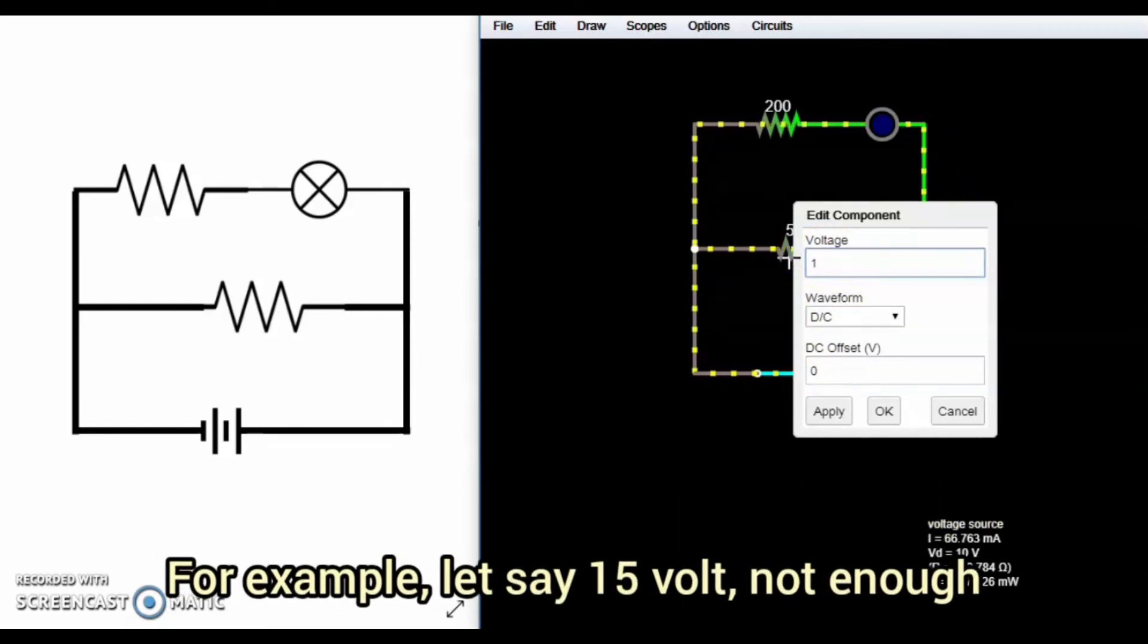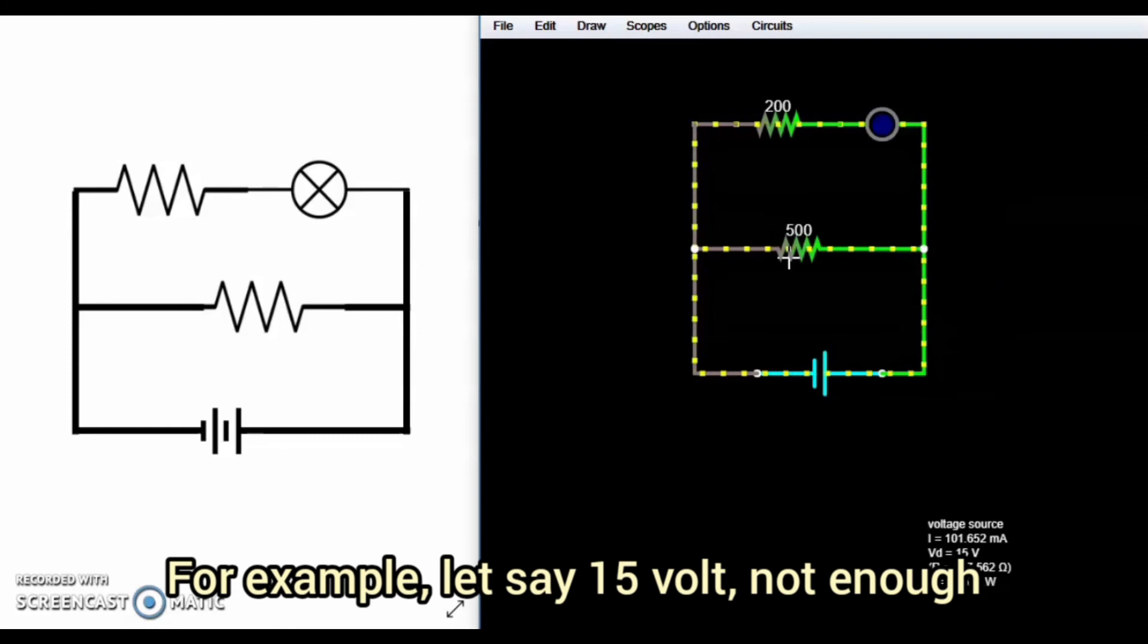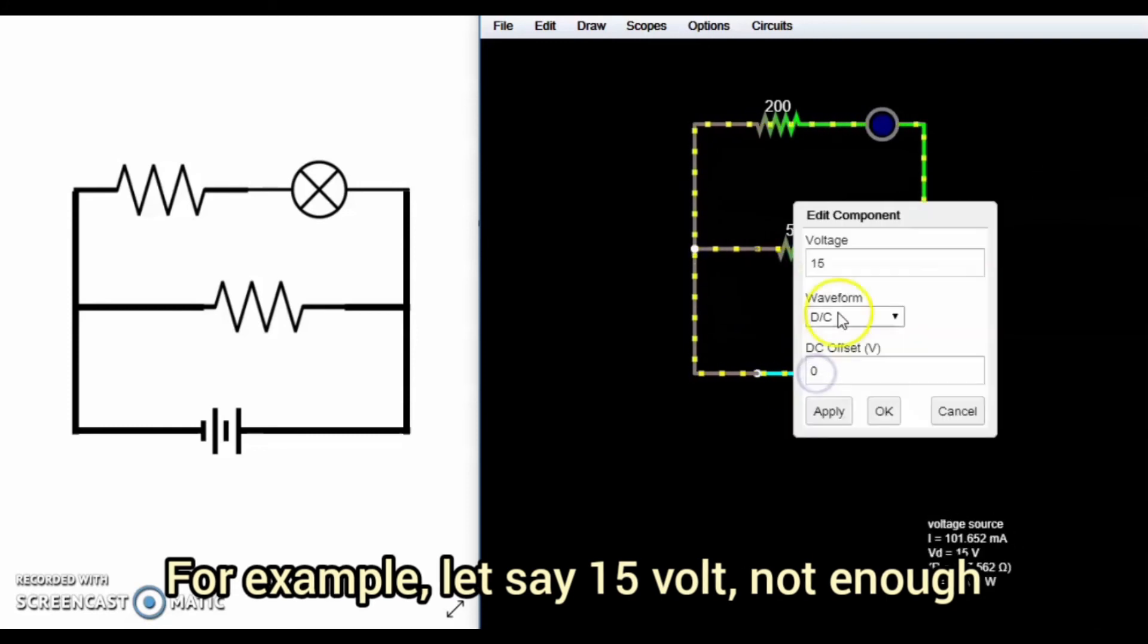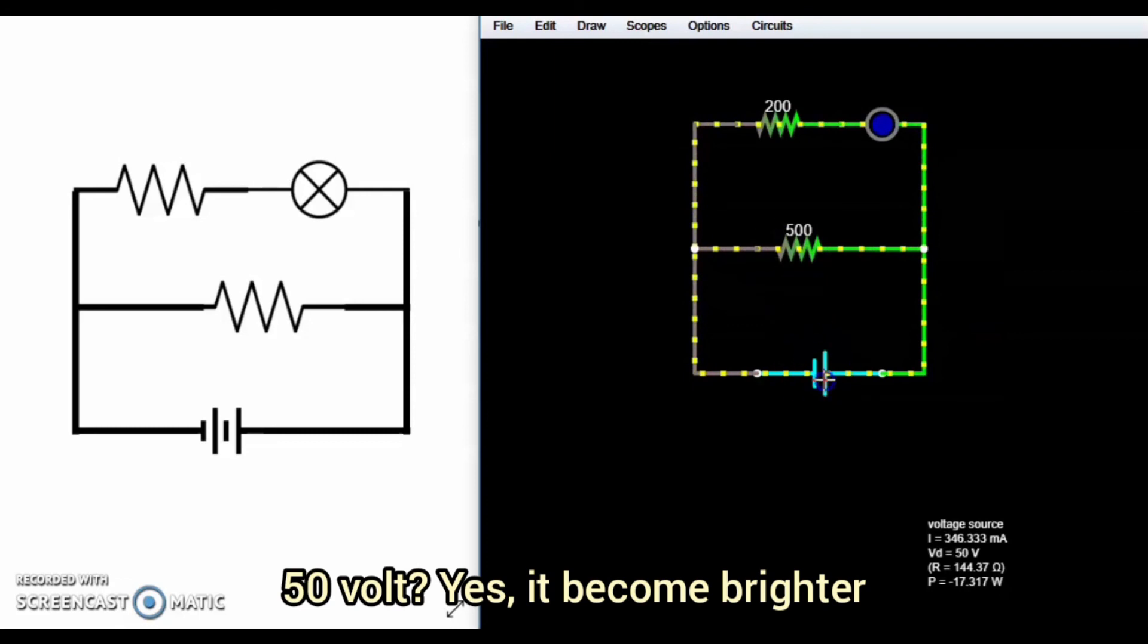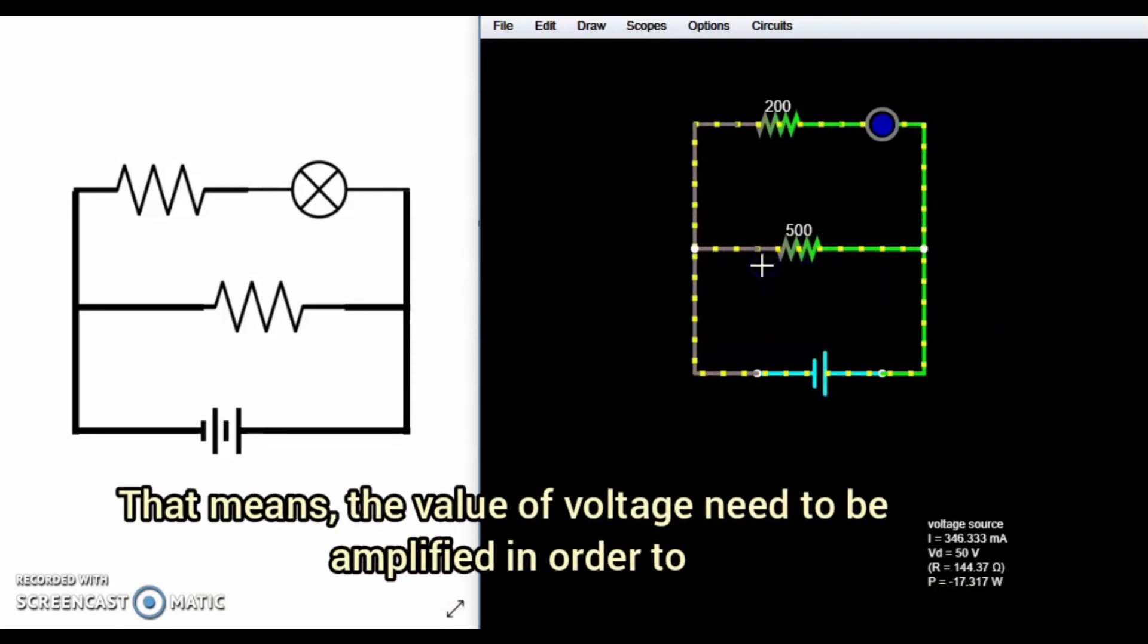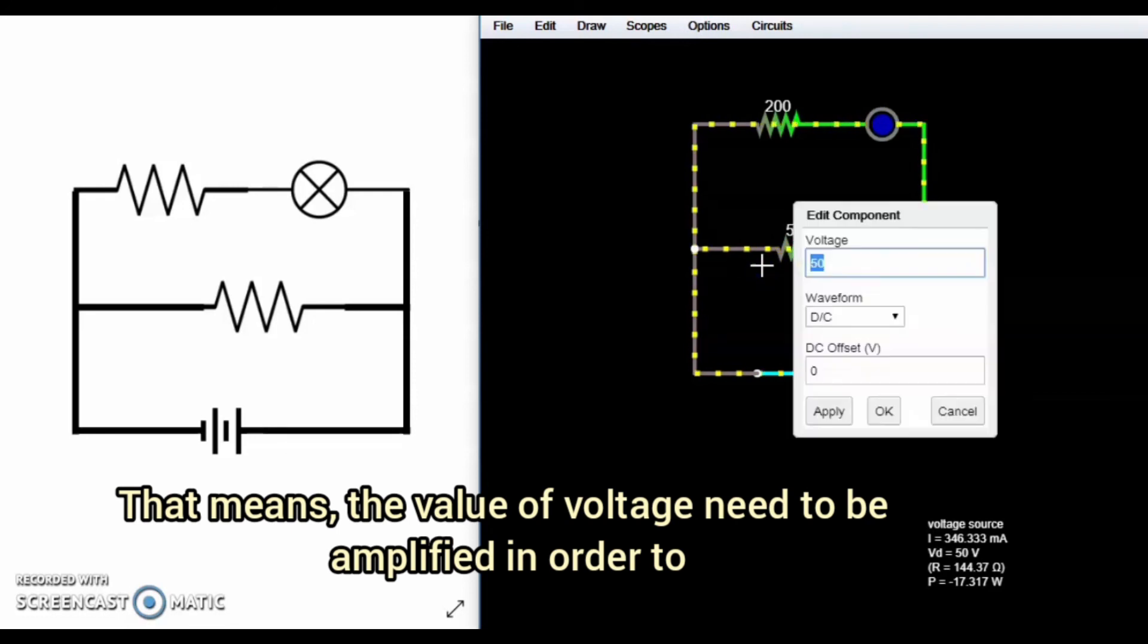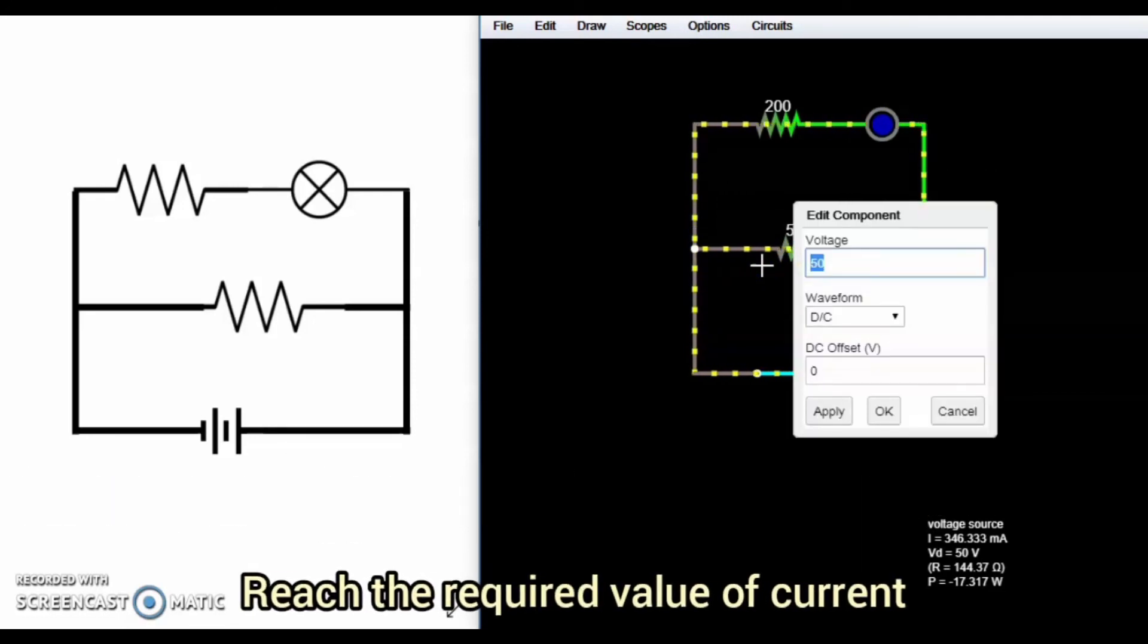For example, let's say 50. Not enough. 100. Yes, it becomes lit up. That means the value of voltage needs to be amplified in order to reach the required value of current.